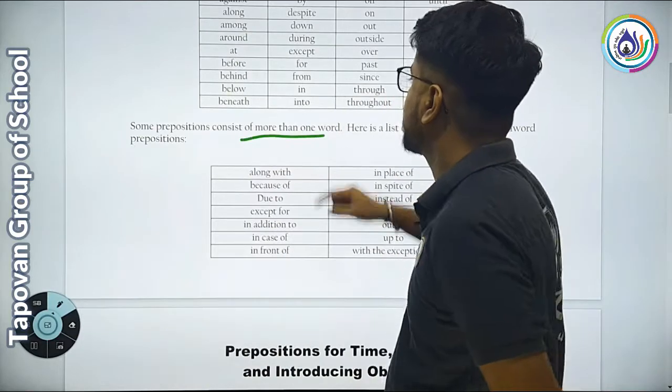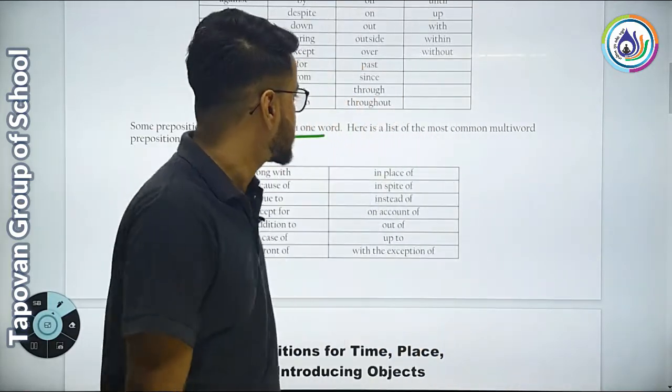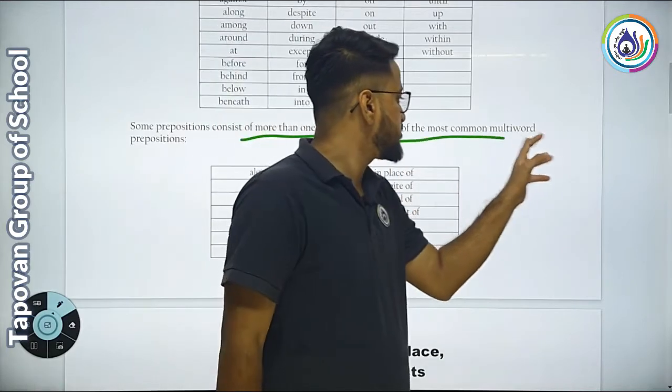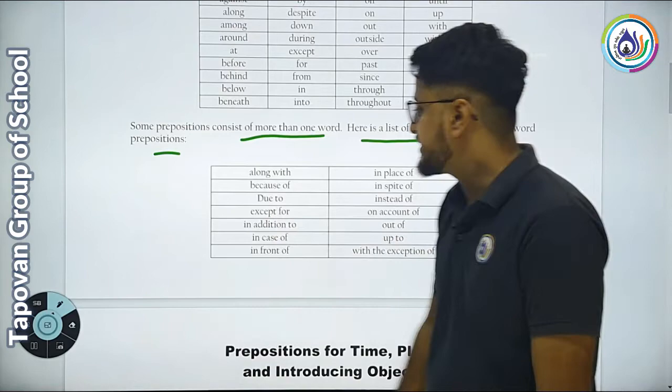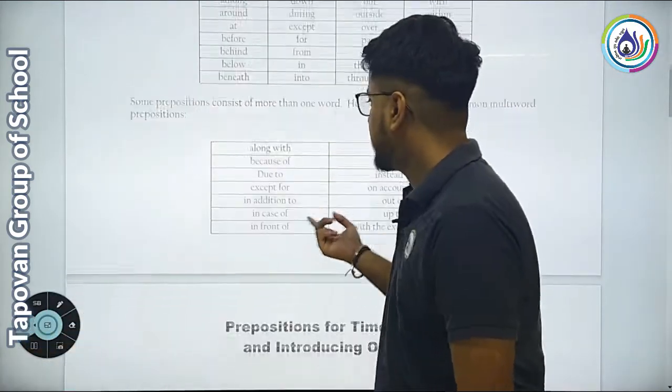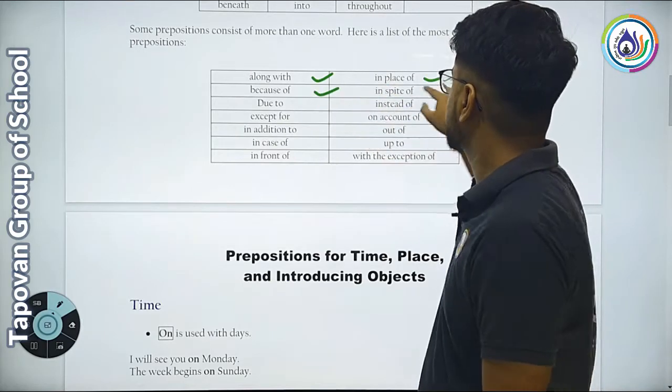Some prepositions consist of more than one word. Here is a list of some common multi-word prepositions: along with, in place of, because of, in spite of, due to, instead of, except for, on account of.